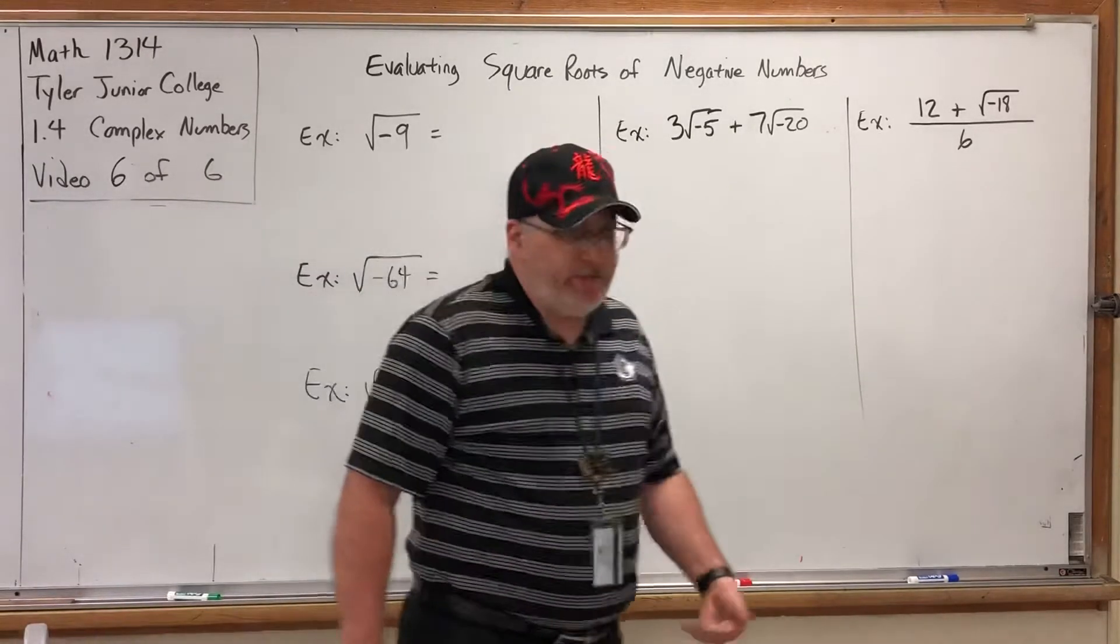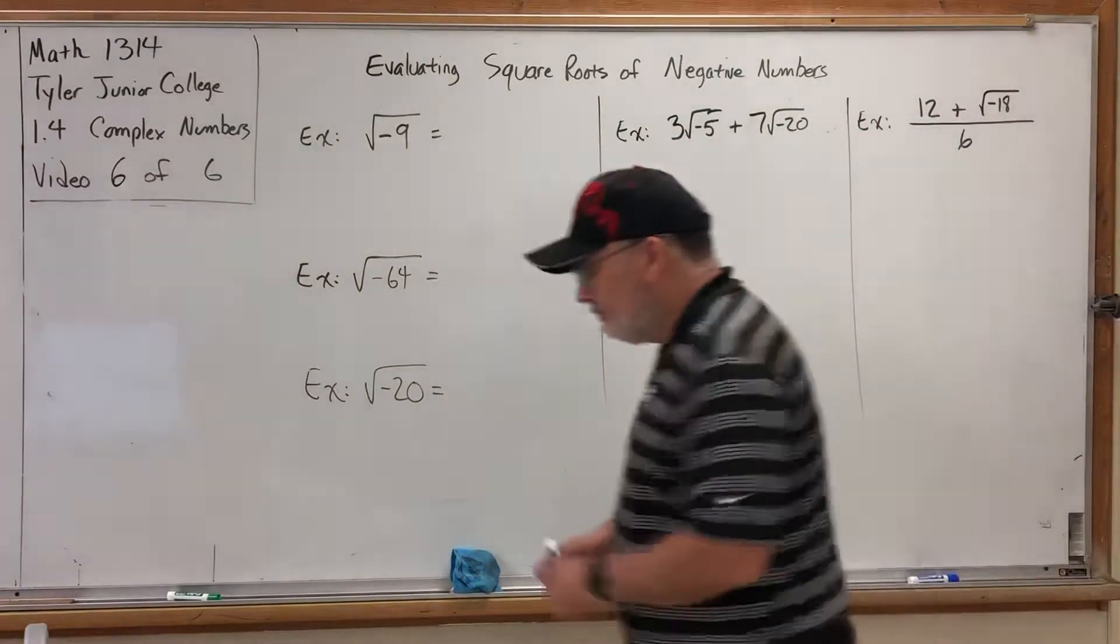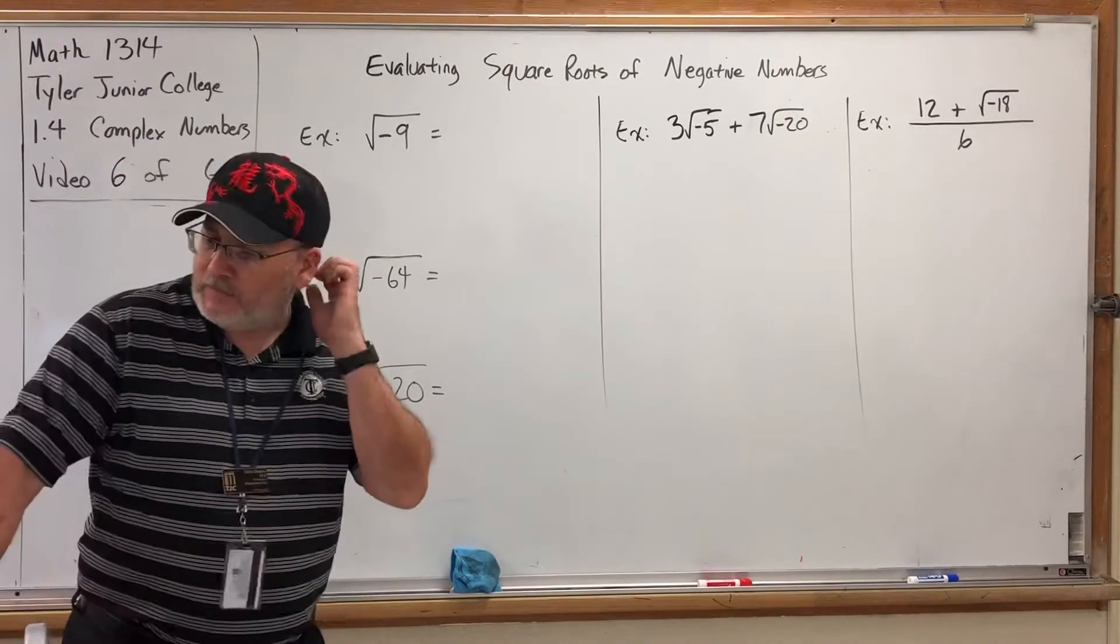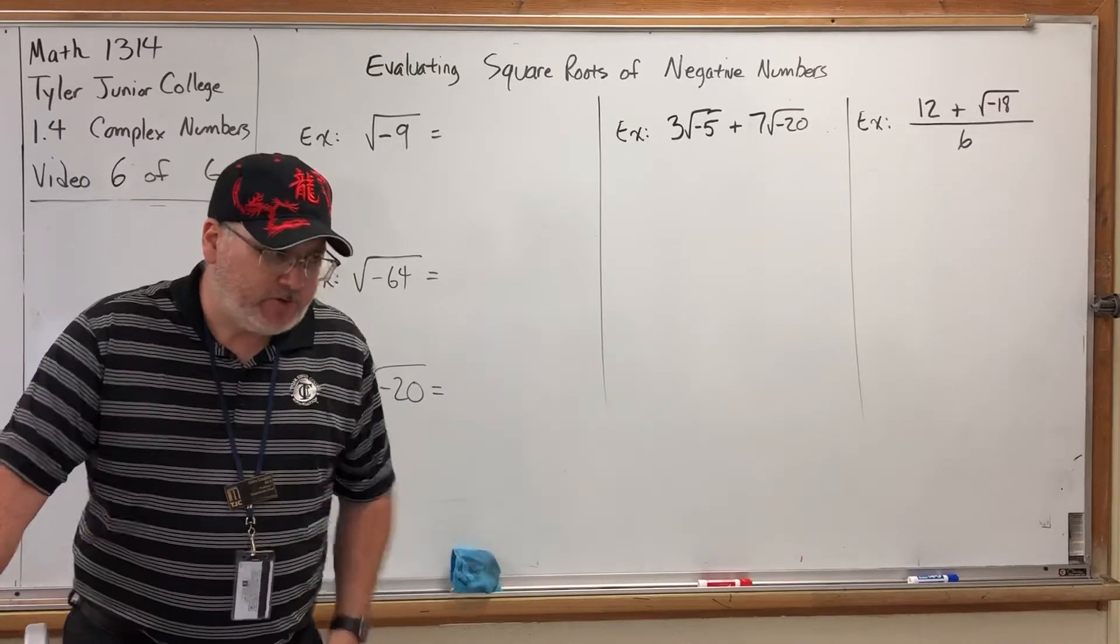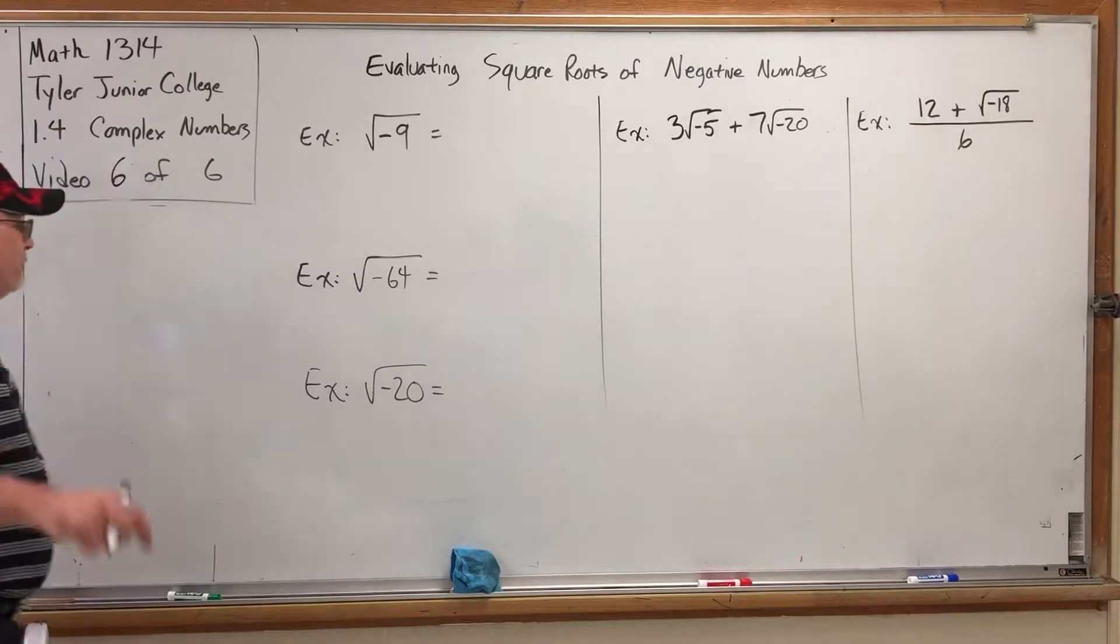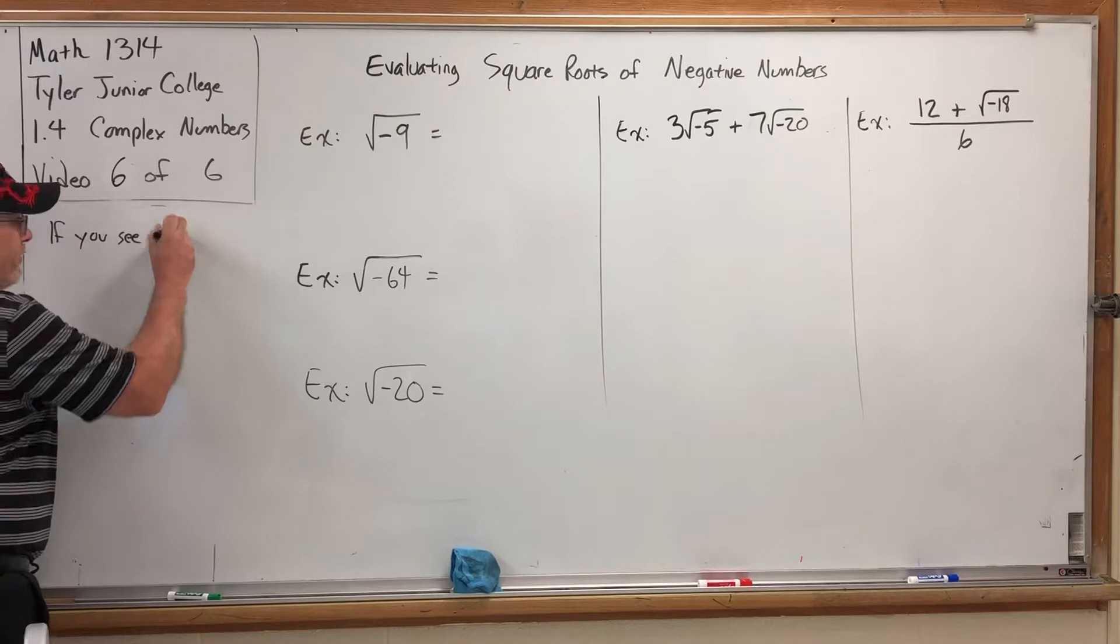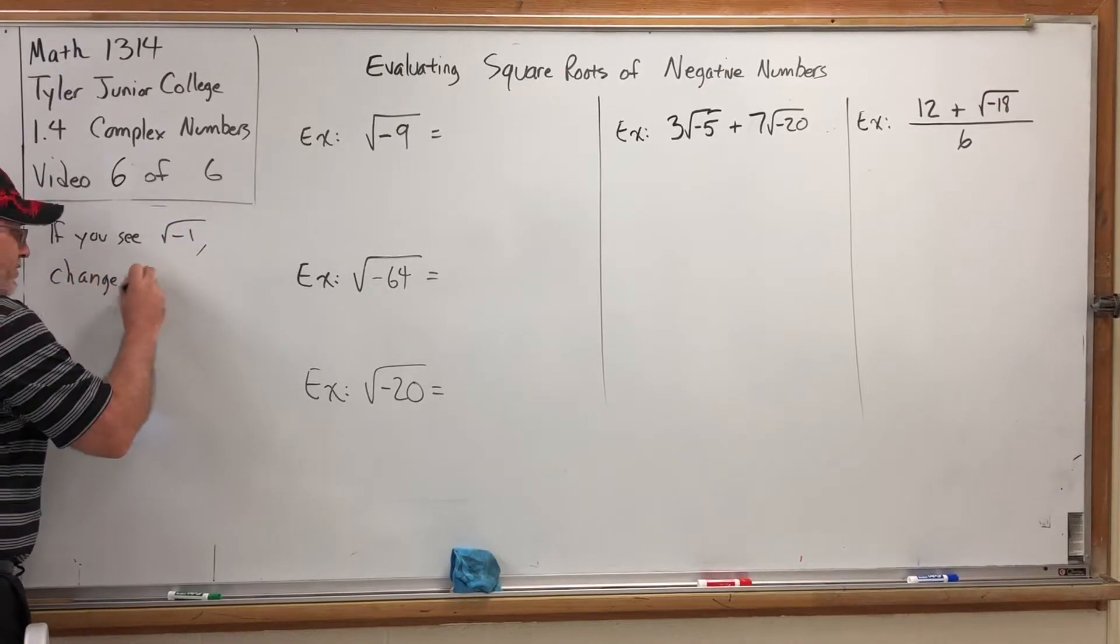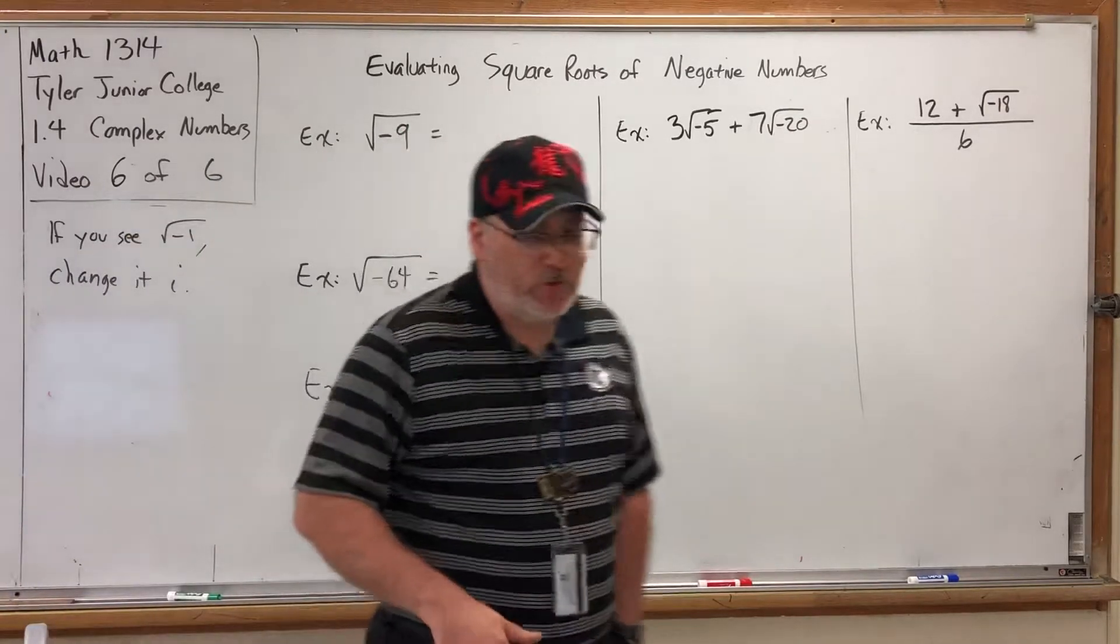In this final video, we're going to talk about evaluating square roots of negative numbers, which sounds like something we should have done at the beginning since, after all, imaginary numbers and hence complex numbers came to be from attempting the square root of negative 1. Just a reminder, if you see the square root of negative 1, change it to i. This is a direct consequence of the definition of i being the answer to the square root of negative 1.